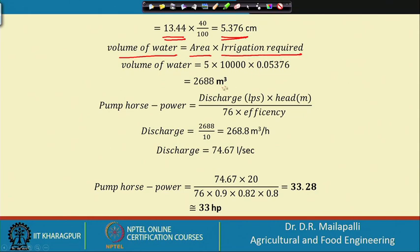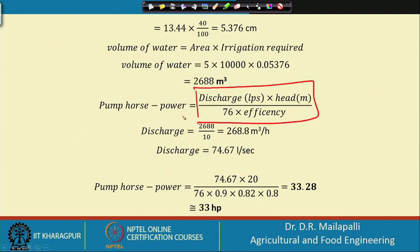Volume of water = area × irrigation requirement. This volume must be applied in 10 hours, so divide by 10 to get the discharge, then convert to litres per second. Using the horsepower equation with discharge in L/s, head of 20 meters, the conversion factor 76, and combined pump, drive, and motor efficiencies, you get 33 HP required to operate the entire system for 10 hours to irrigate the field at 40% depletion of available water.